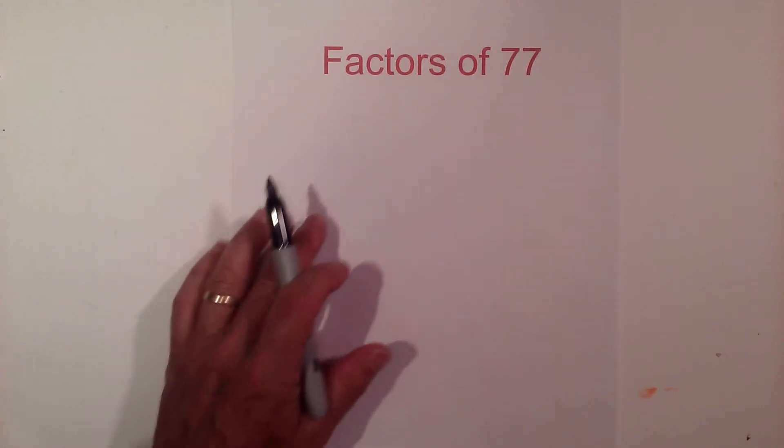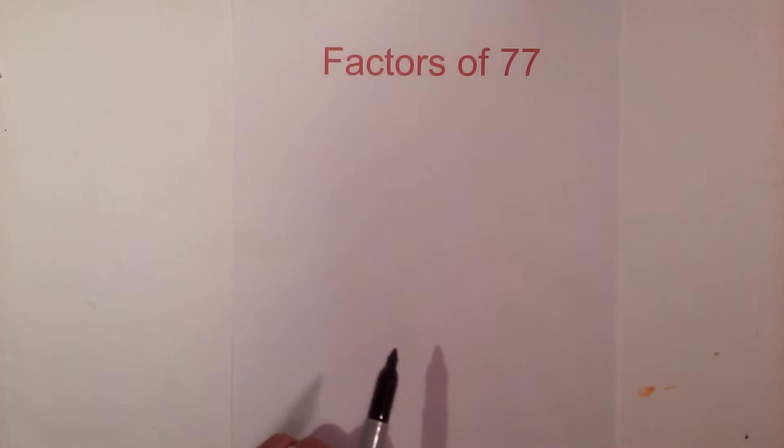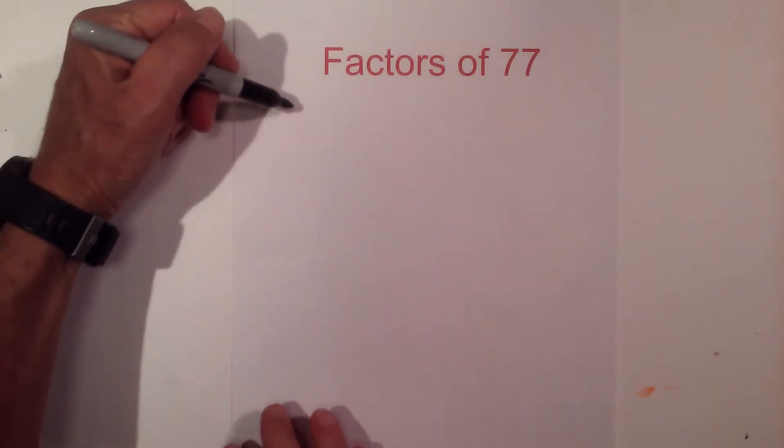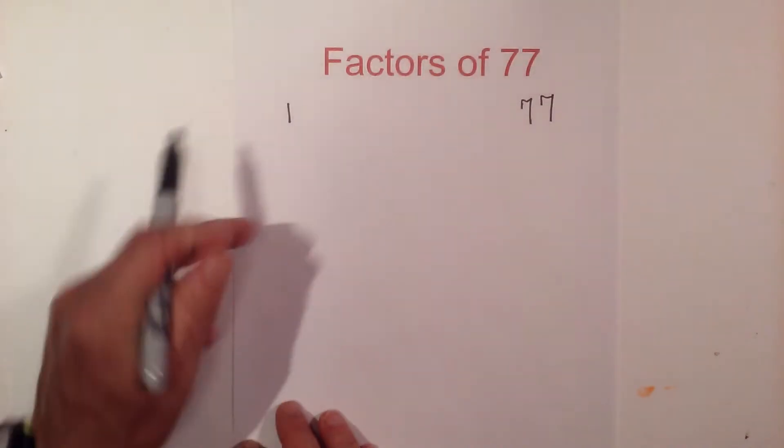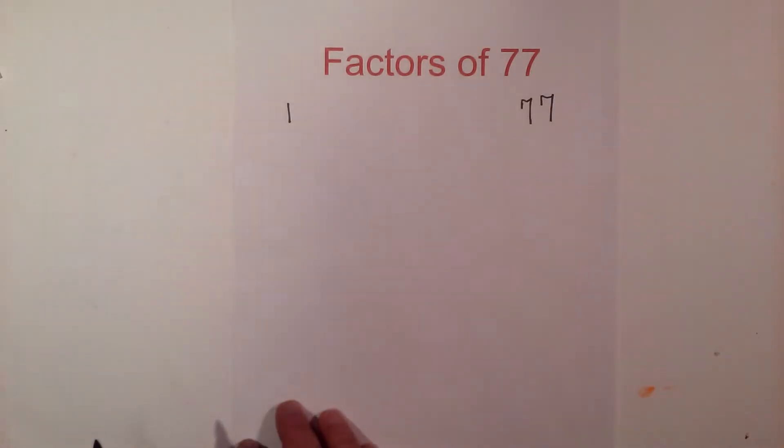In this video, I'd like to go over all the factors of 77 and then the multiples of 77. So let's get started. I like to multiply 1 times 77 and then find all the factors in between that multiply together to equal 77.